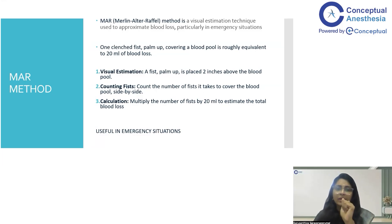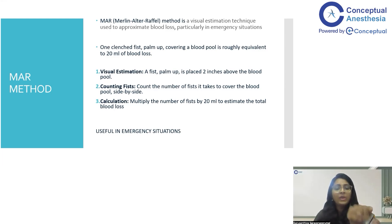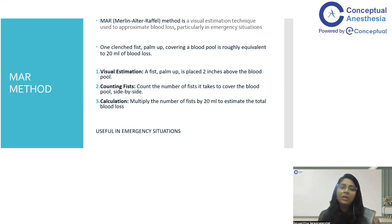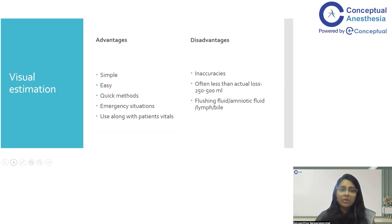This is a visual estimation wherein you keep a closed fist placed just two inches above the bed pool. More than two inches and you may cover more area, leading to underestimation of blood loss. Count how many fists are needed to cover the pool — one fist, two fists, three fists. Each fist accommodates approximately 20 ml, so if there are five fists worth of blood loss, the total is around 100 ml. This is the quickest method and can be used by anyone, even those not trained in blood loss estimation.